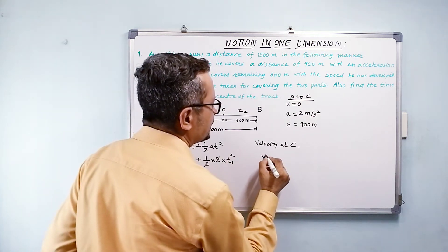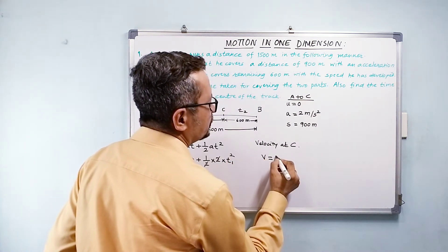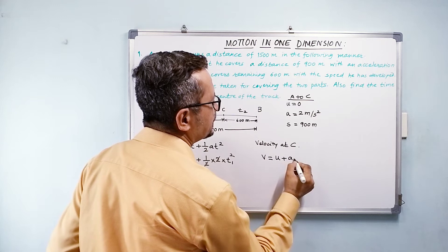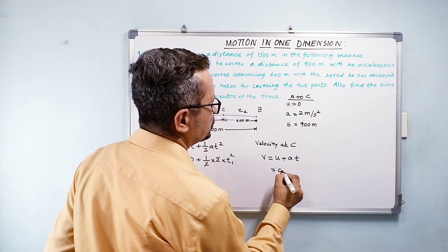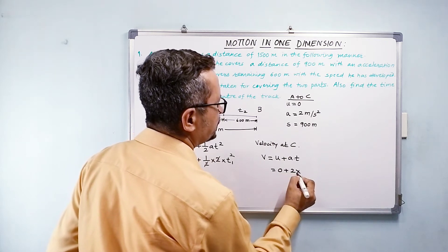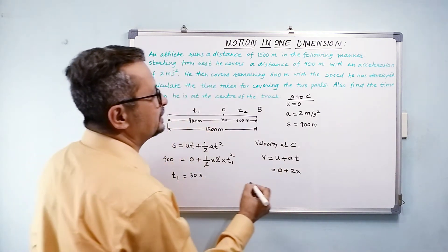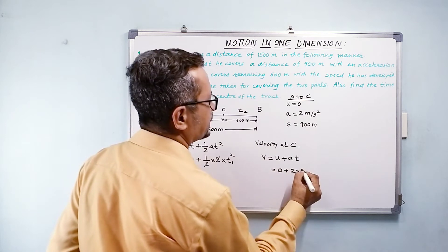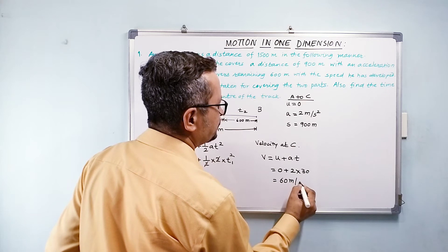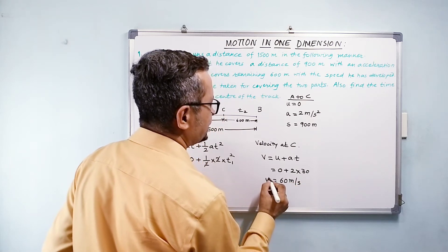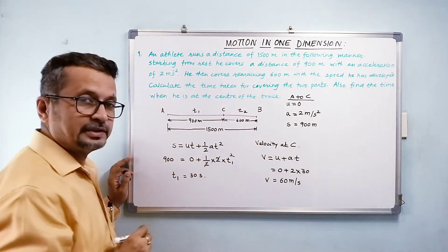So my v equals u plus at. So my velocity will be equal to 0 plus 2 into what is my t1? My t1 is 30 seconds. So that is equal to 60 meters per second. That is my velocity here.